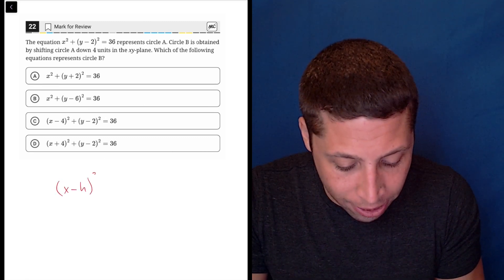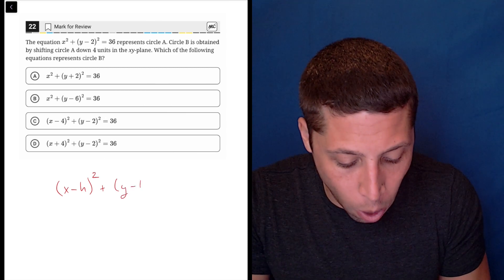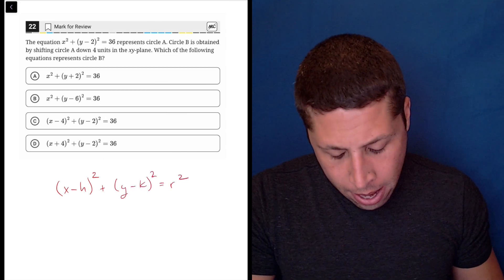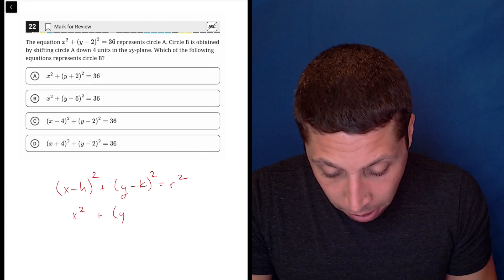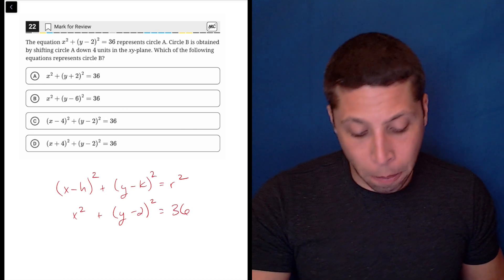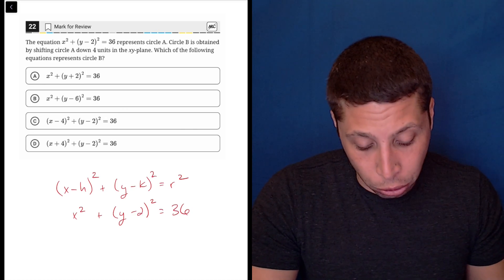x minus h squared plus y minus k squared is equal to r squared. So we lined up what we're given. We have some pieces missing and some pieces changed, but it basically follows the circle formula.